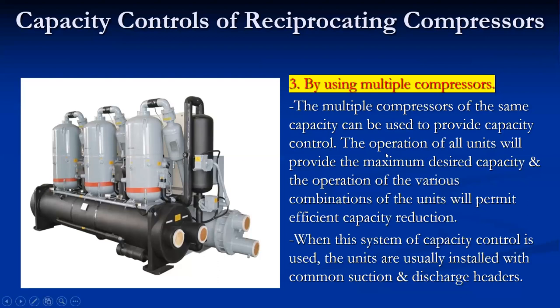Multiple compressors of the same capacity can provide capacity control. The operation of all units provides maximum desired capacity, while various combinations permit efficient capacity reduction. These units are usually installed with common suction and discharge headers. A typical layout includes compressors, oil separators, and accumulators. By shutting off a particular compressor, capacity can be varied — this is the third simplest method of controlling capacity in a reciprocating compressor.